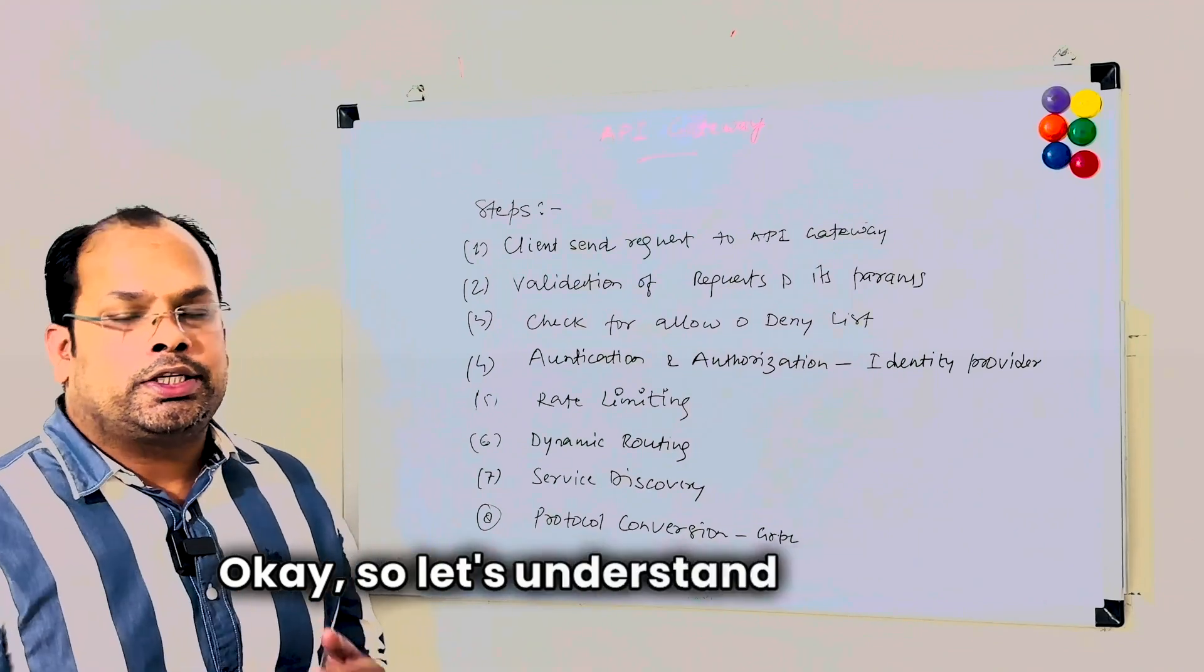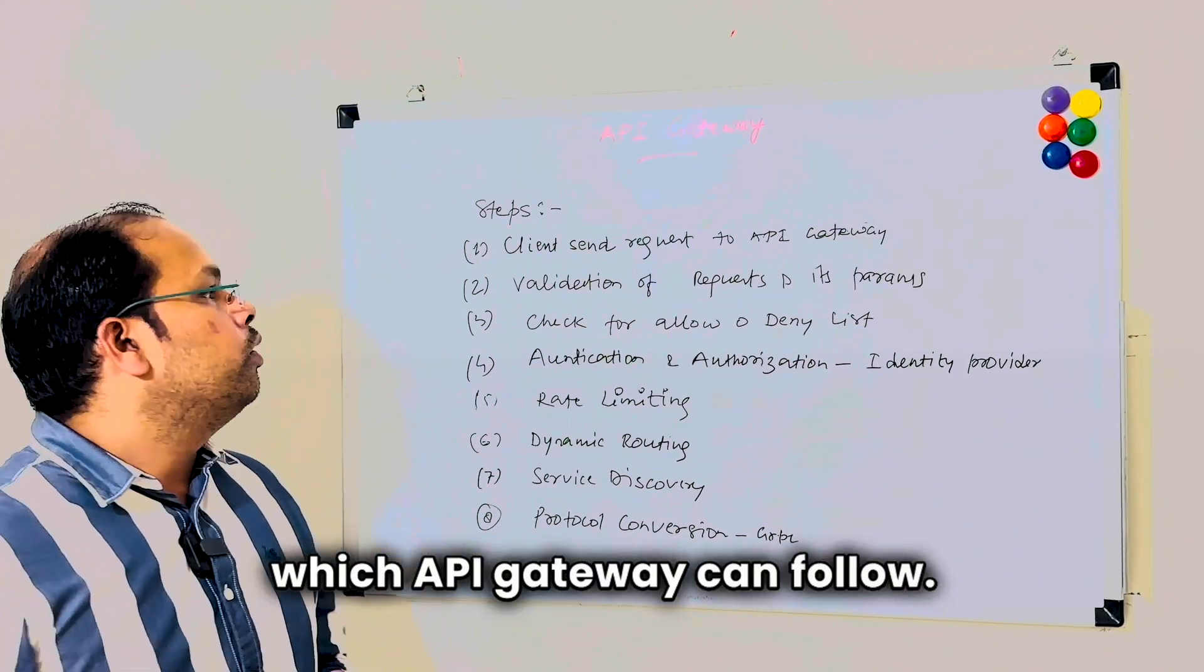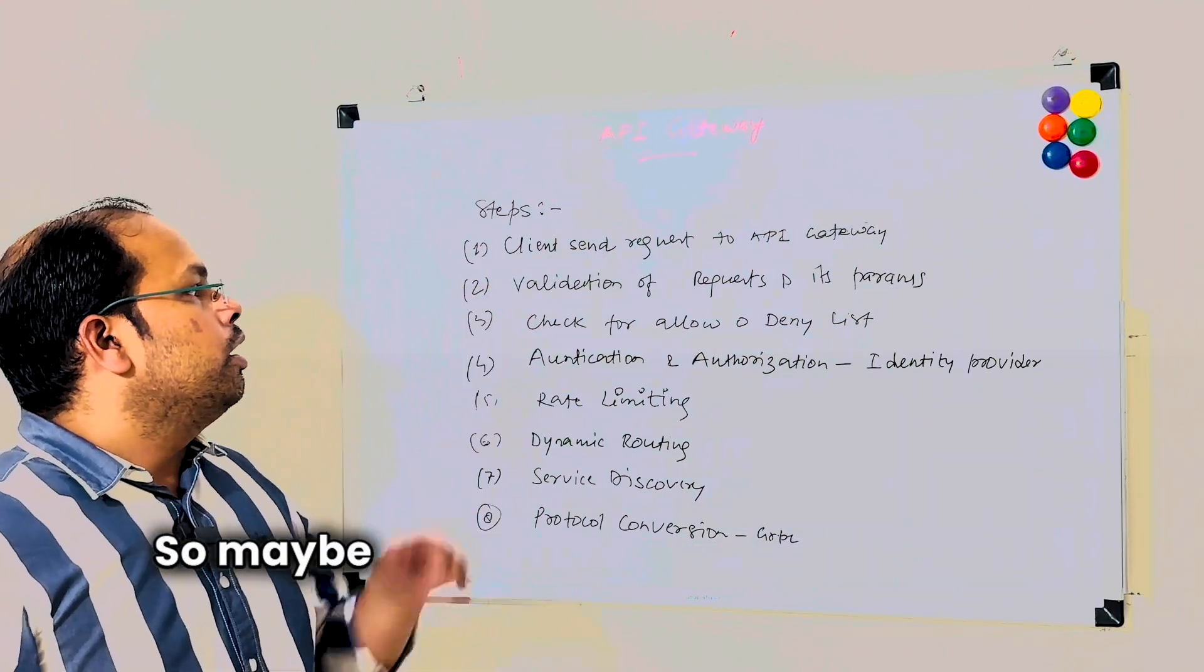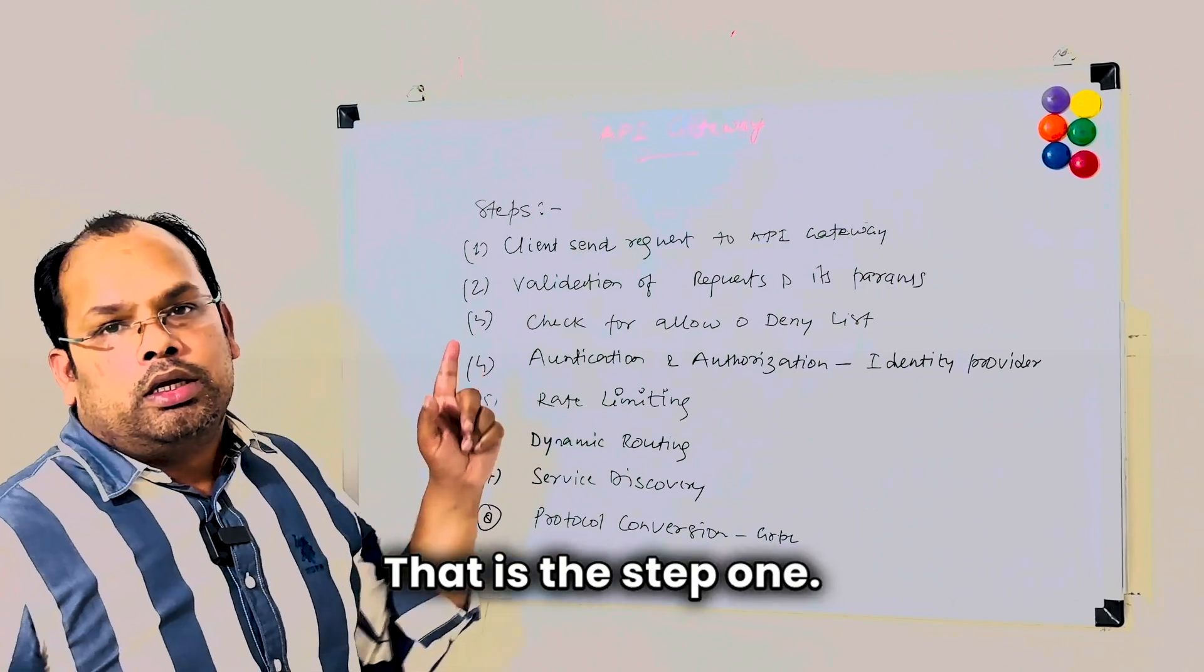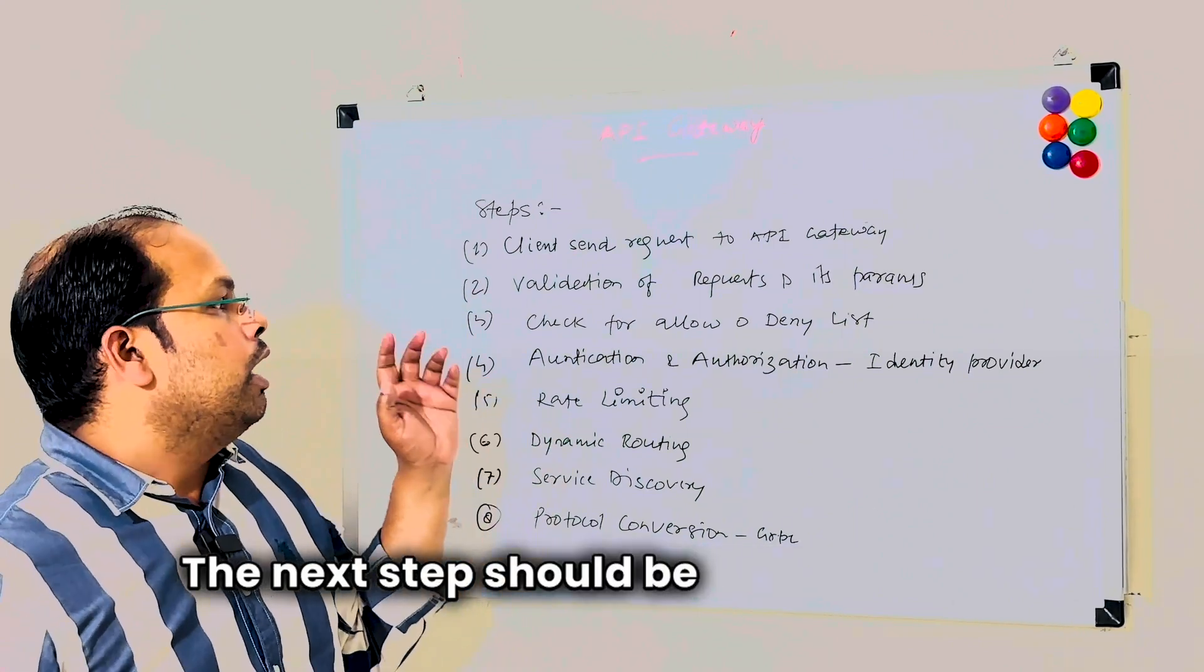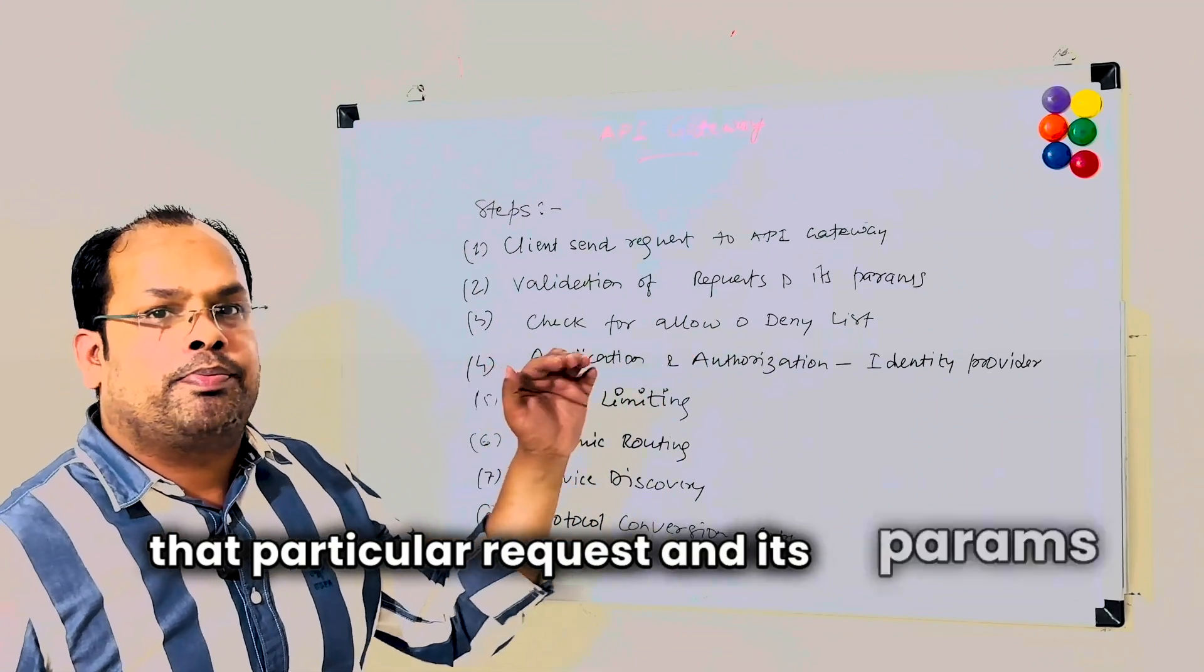Let's understand the steps which API Gateway can follow. Maybe client sends requests to an API Gateway - that is step one. The next step should be validation of that particular request and its params as well.